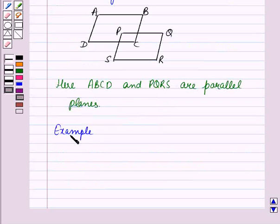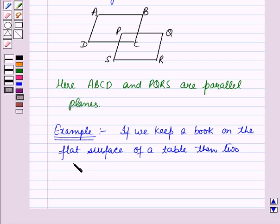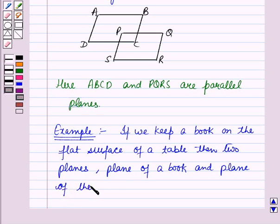Now let us see an example for this. That is, if we keep a book on the flat surface of a table, then the two planes, that is, plane of a book and plane of the table, are parallel.